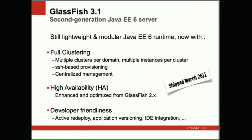We shipped GlassFish 3.1 — our second-generation Java EE 6 server — back in March 2011. The reason I call it the second generation is because we started with a fully compliant, full-platform Java EE 6 server back in GlassFish 3.0, launched in December 2009. With GlassFish 3.1 we add on top of the modular kernel full clustering, meaning you can have multiple clusters and multiple instances of GlassFish in each cluster.